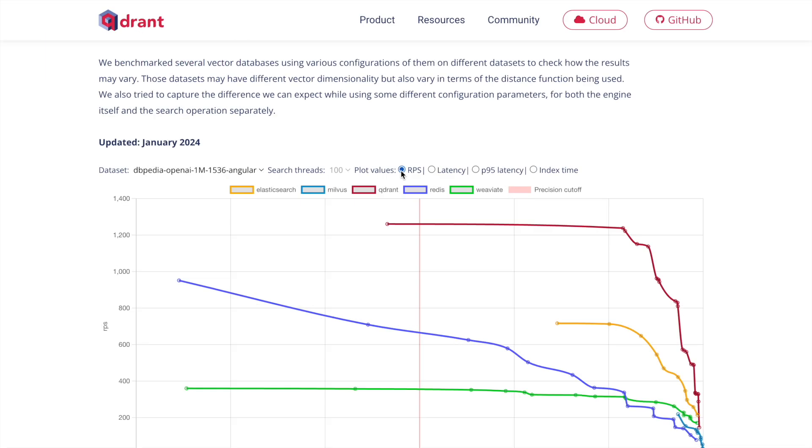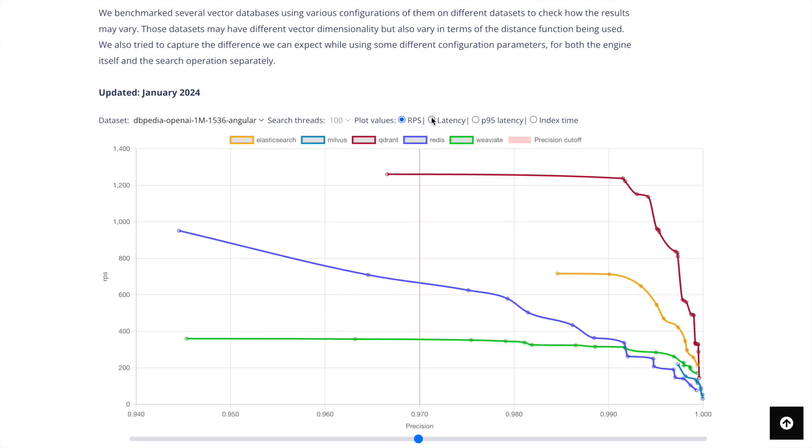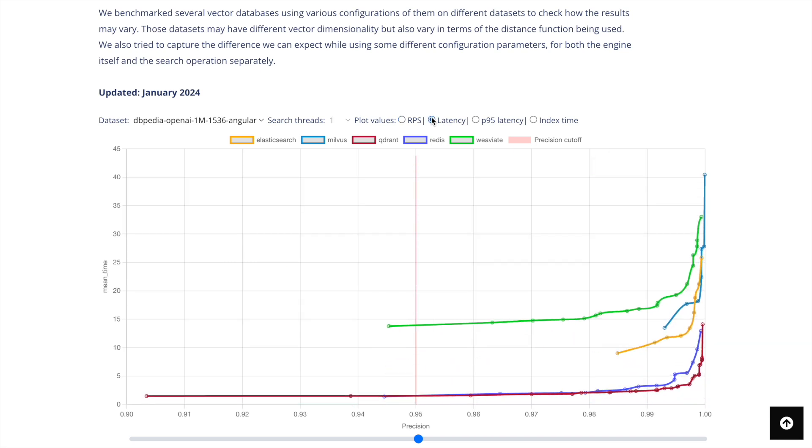So here you can clearly see the benchmarking analysis done for DBpedia openai dataset. The current number of threads that are set are 100. Based on the different parameters of precision, these are the RPS numbers. So RPS is request per second, higher the value the better they are. So here in this particular use case and dataset, Quadrant is doing a fantastic job. In case of latency, now again latency should be as low as possible, which is the case that we are seeing here as well. So the latency in terms of getting the response for this particular dataset is as low as possible.